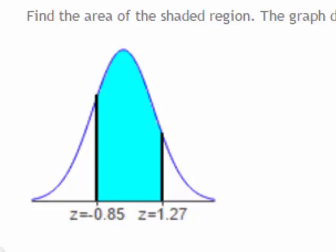In this question, we're asked to find the area in the shaded region. The question tells us that we're looking at the standard normal distribution with a mean of 0 and a standard deviation of 1.